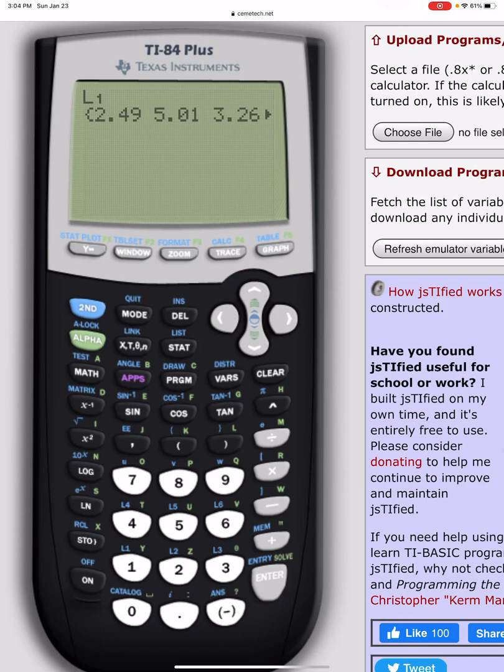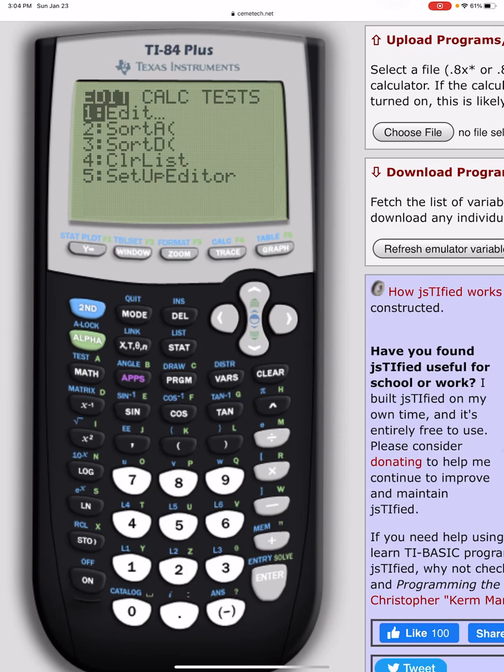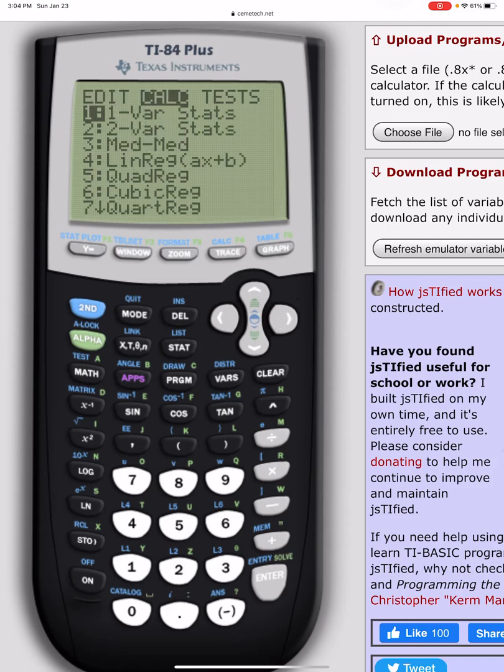Now, here's how you're going to do your calculations. You're going to hit your stat button. You're going to then hit your right arrow to go to where it says calc for calculations. And you see there's a whole bunch of stuff it will do for you. For this video, we're just doing number one there, which is one variable statistics. Hit enter.